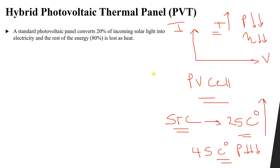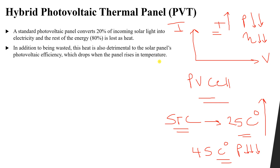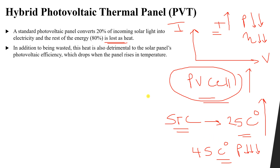Why does the temperature of the cell increase? Because the rest of the sun irradiation is converted into heat energy and transferred to the PV cell. In addition to being wasted, this heat energy — the 80% not converted into electrical power — is also detrimental to the photovoltaic efficiency. When temperature increases, this heat energy leads to an increase in the temperature of the PV cell, which leads to a decrease in efficiency.